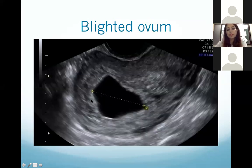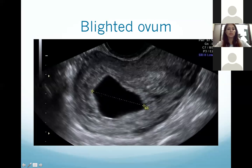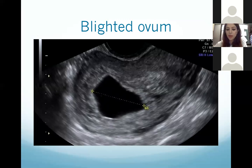Here you can see a large gestational sac but there is no fetal pole and no yolk sac inside this sac. This is a case of a blighted ovum.